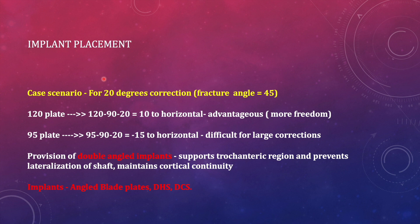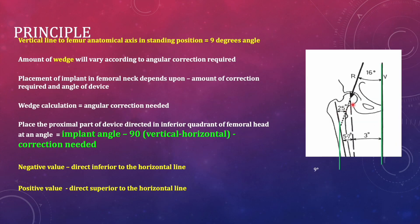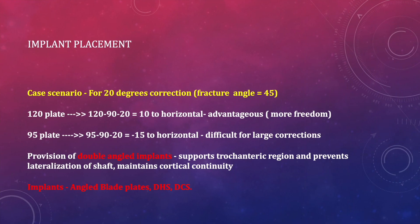Example: if correction needed is 20 degrees (fracture angle 45 degrees; 45 minus 25 = 20 degrees), and using a 120-degree implant like a double-angle blade plate or double-angle DHS, then: 120 minus 90 minus 20 = 10 degrees. Positive value means place the screw track 10 degrees above the horizontal. For a 95-degree blade plate the same formula gives minus 15 degrees — very difficult to place. Therefore, when needing large corrections, use higher-angle devices like 120 or 130 degrees, which give a positive value and easier implant placement above the horizontal.